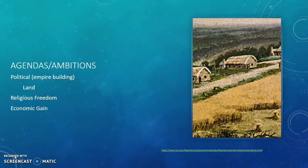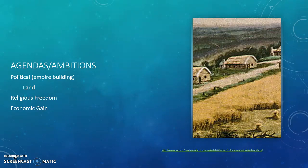Clearly one of their biggest agendas was to acquire land. In acquiring land they would acquire additional political power, because they would have the capacity to gain more economic power wherever they ended up as a result of that additional land acquisition. For other Europeans, however, they came solely because they were seeking religious freedom. So the major things that Europeans wanted were additional political power, religious freedom, and from that political power, the additional economic gain that they could get from acquiring land.